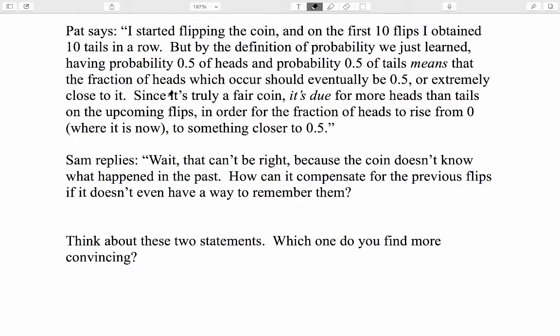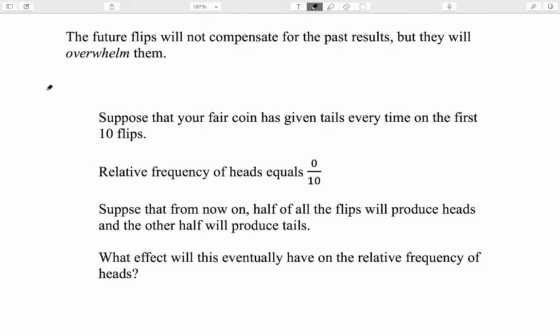Sam replies, wait a minute, that can't be right because the coin does not know what happened in the past. How can it compensate for the previous flips if it doesn't even have a way to remember them? Hmm. Many people think like Pat, and many people think like Sam. Think about these two statements. Which one do you find more convincing?